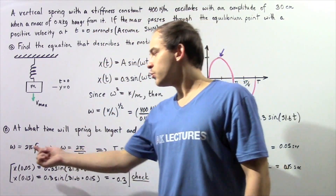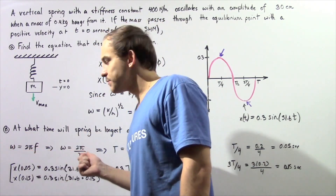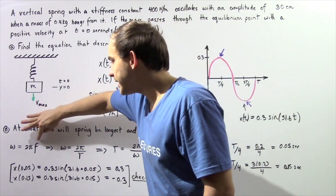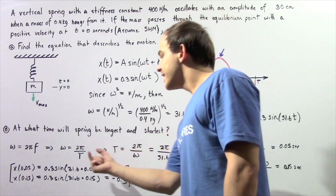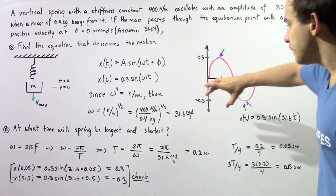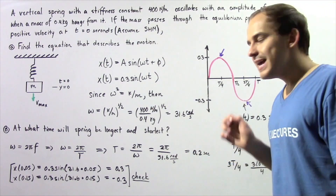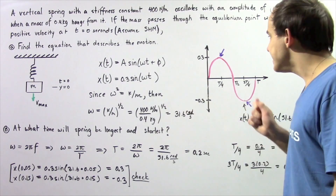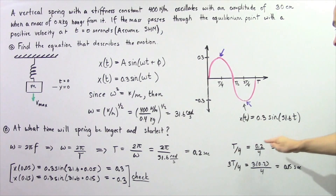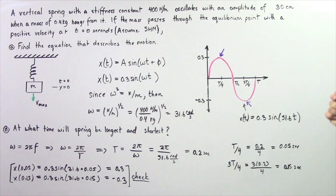The relationship between angular frequency and frequency is: ω = 2πf. Frequency is related to period by f = 1/T, so we can substitute and rearrange to find: T = 2π/ω. We know ω is 31.6 radians per second, so 2π divided by 31.6 gives us about 0.2 seconds. Our period is 0.2 seconds. To find the time intervals, T/4 = 0.2/4 = 0.05 seconds, and 3T/4 = 3 × 0.2/4 = 0.15 seconds.